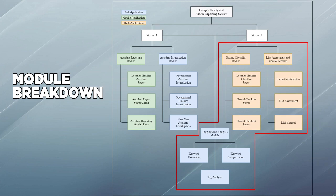The modules of the project are as follows. The CampusSafe system has a total of five main modules. Three modules were developed in the previous version: the Accident Reporting Module, Accident Investigation Module, and Tagging Analysis Module. In version 2, two new modules were added: the Hazard Checklist Module and the Risk Assessment and Risk Control Module. The Tagging Analysis Module has been continued and used in version 2.